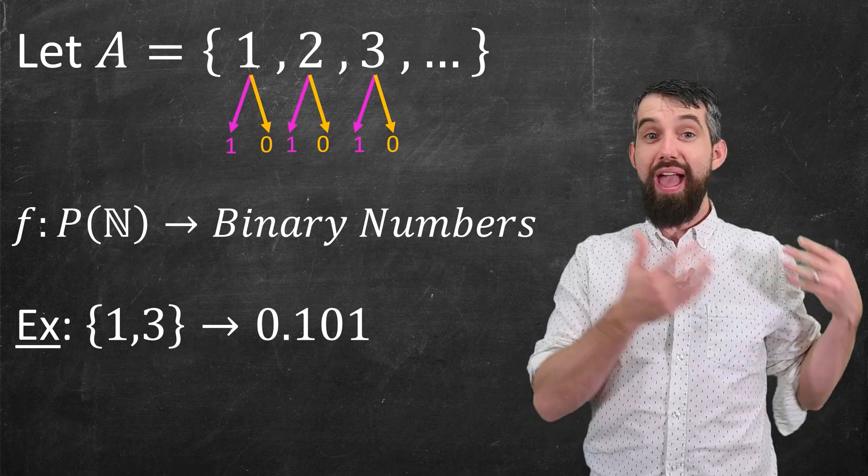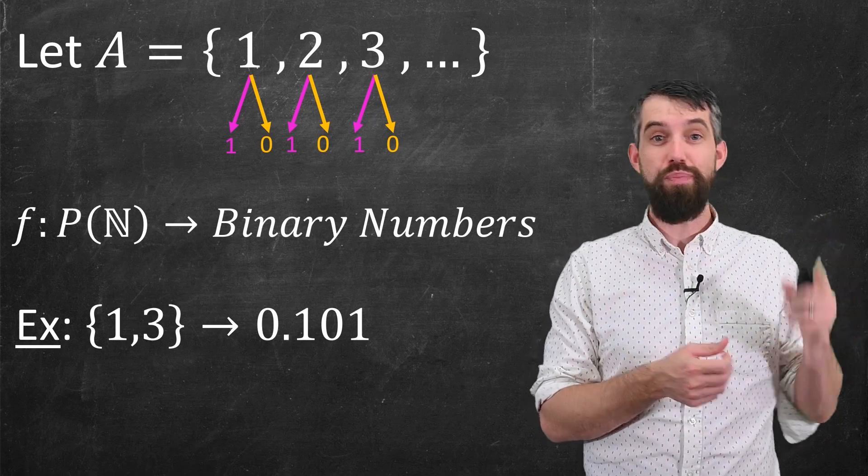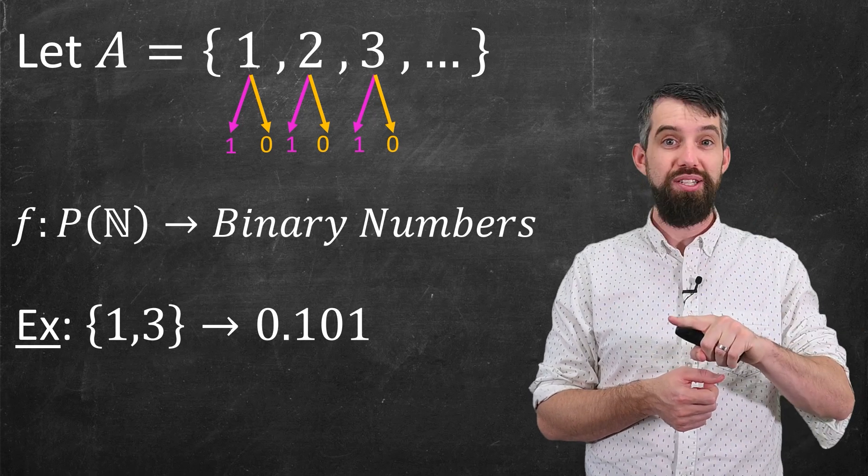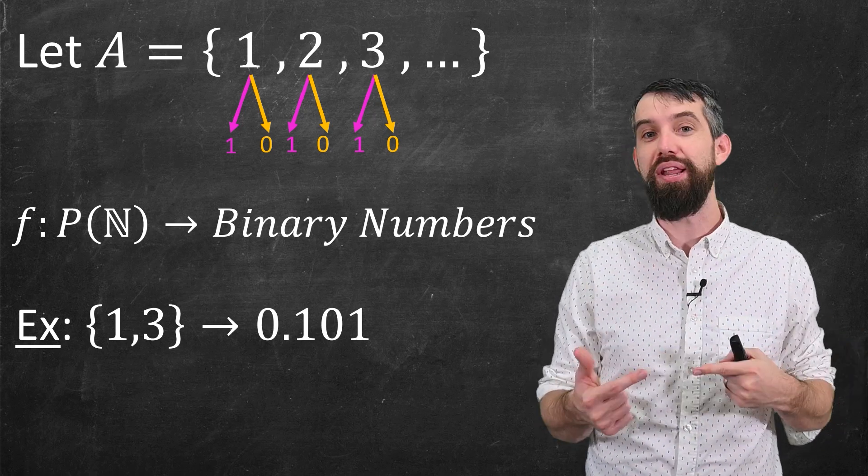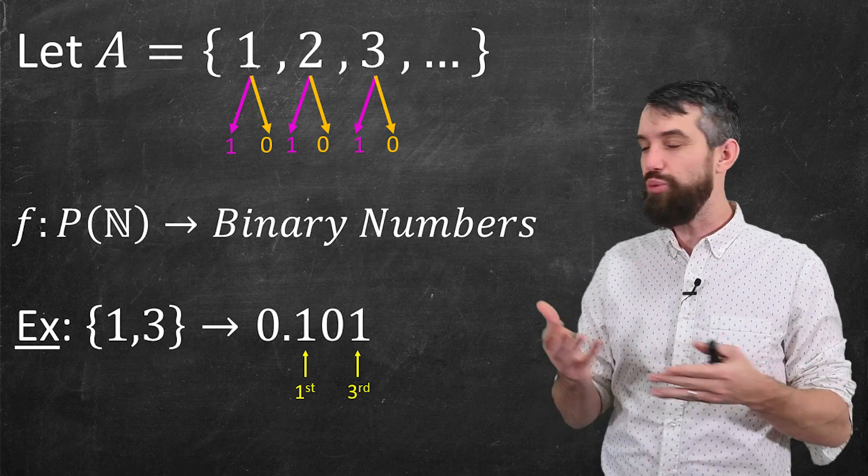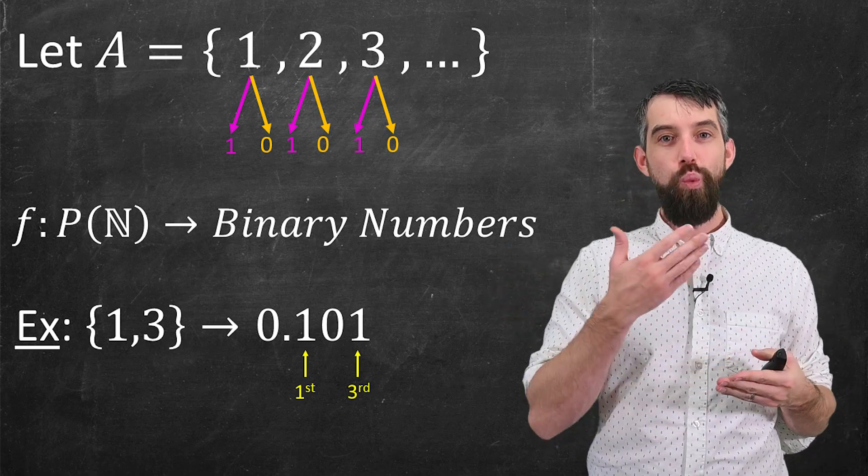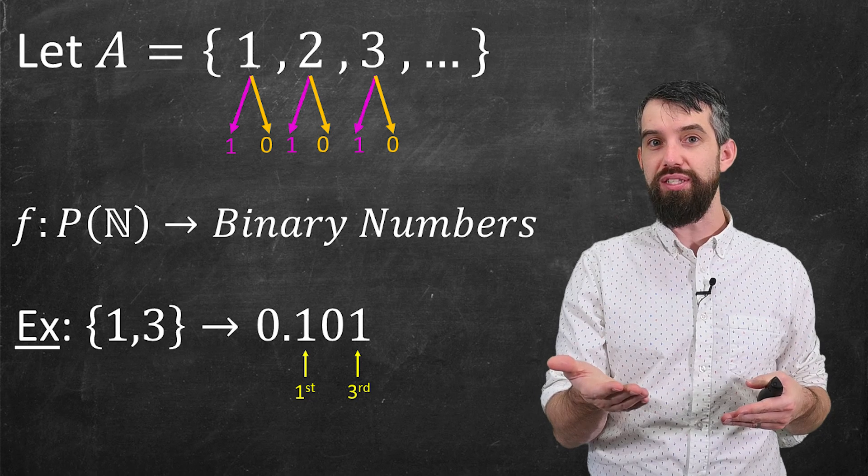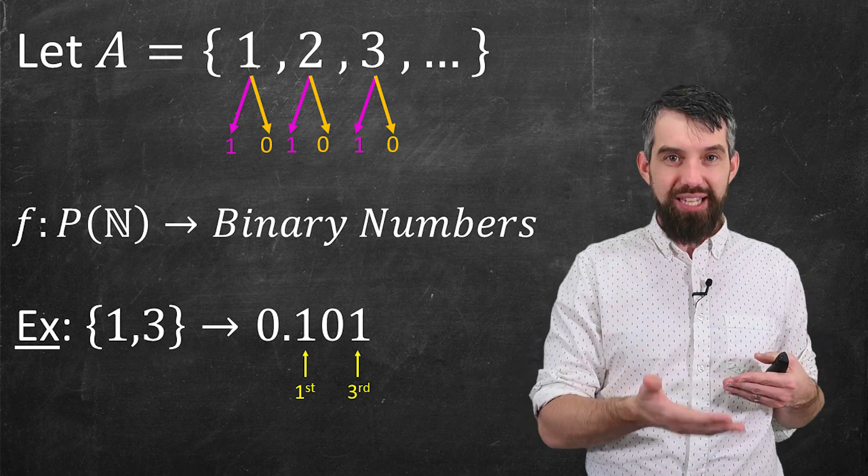And basically, the idea is for any number in the natural numbers included in my subset, I'm going to put a one or a zero, depending on whether it's in or not in the subset. So in our case with {1, 3}, I'm going to put ones in the first and third locations, and then zero everywhere else.